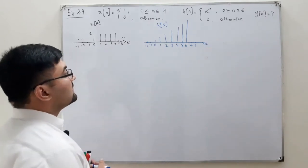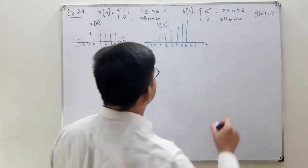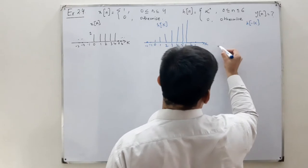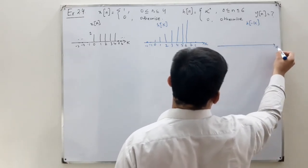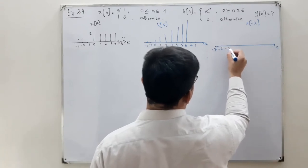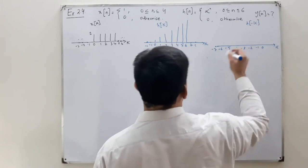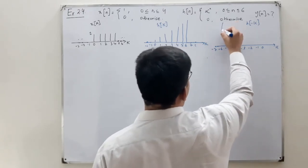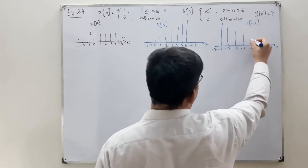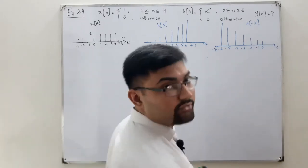Now you require h[-k], so you have to time-reverse the signal. On the k-axis, minus 7 would be 0, then minus 6, minus 5, minus 4, minus 3, minus 2, minus 1, and 0. The maximum weight would be at k = minus 6, then decreasing toward minus 3, minus 2, minus 1, and 0.